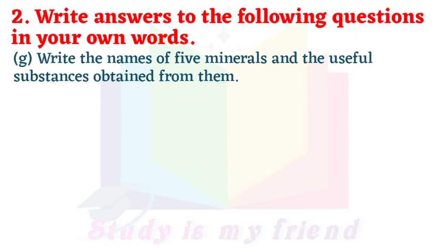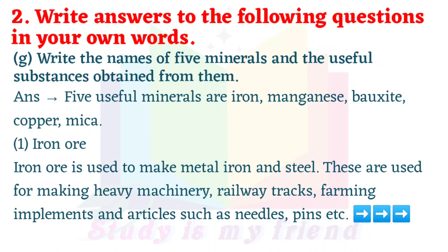Question 7: Write the names of 5 minerals and the useful substances obtained from them. The 5 useful minerals are Iron, Manganese, Bauxite, Copper and Mica. 1. Iron ore: Iron ore is used to make metal, iron and steel. These are used for making heavy machinery, railway tracks, farming implements and articles such as needles, pins, etc.